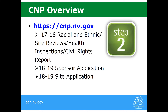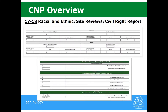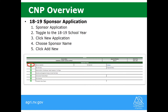Now we are going to move into the online section of your application. There are three main components. First, fill out the racial and ethnic site reviews, health inspections, and civil rights report — because this is for the 17-18 school year, it is going to be completed in your 17-18 application. If you complete it in the 18-19 school year, it will result in an error because you have no approved sites yet.